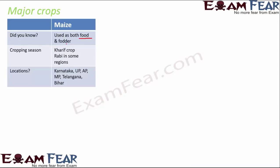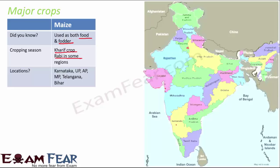Maize is a crop used both as food and as fodder — food for livestock. Its cropping season is kharif, though in some regions it can be a rabi crop depending on moisture availability. Maize is grown in Karnataka, UP, Andhra Pradesh, Madhya Pradesh, Telangana, and Bihar.